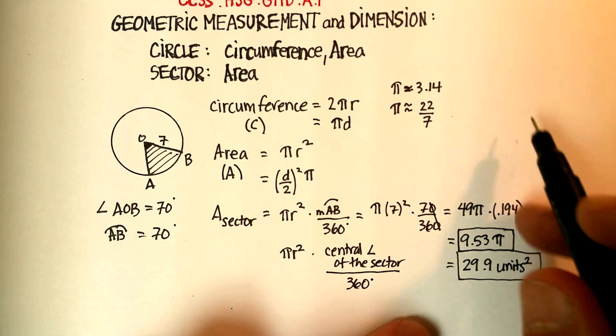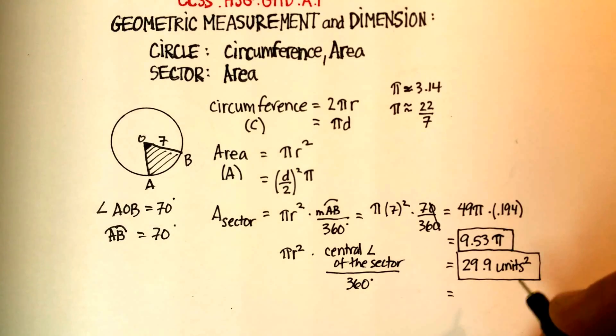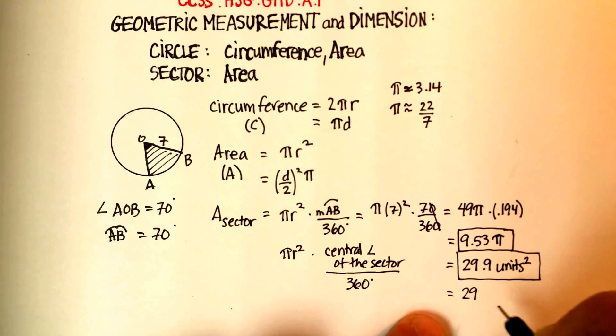And then if you multiplied it by 22/7, 9.52 times 22 over 7, you'll also get 29.94 or 29.9 units squared.